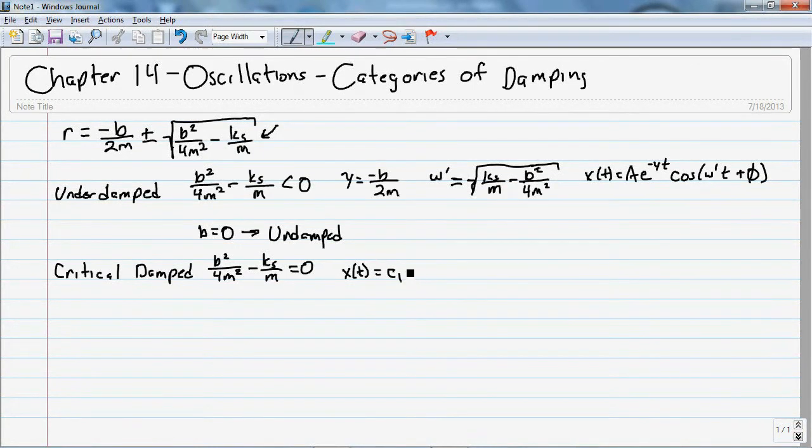And in this case, our formula is going to look something in the form x function of t is equal to c1 e of negative gamma t plus c2 t e to the negative gamma t.